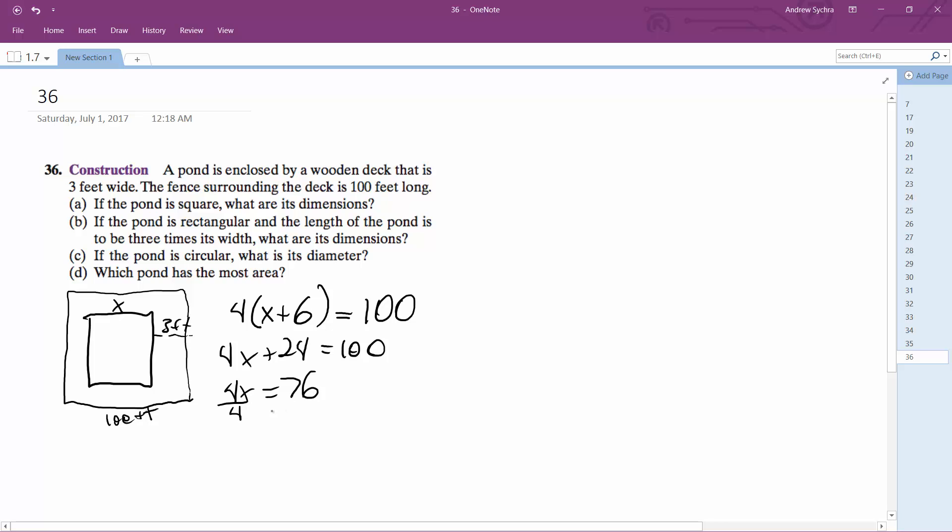And if you divide, 76 divided by 4, we get 25—or not, excuse me, we get 19. So that's part A.